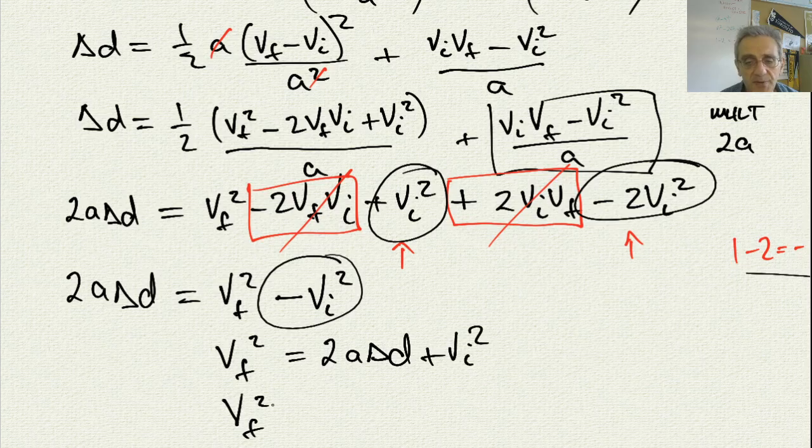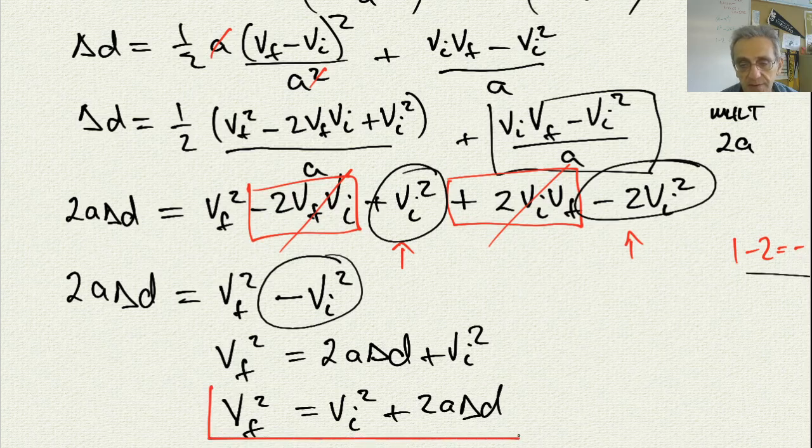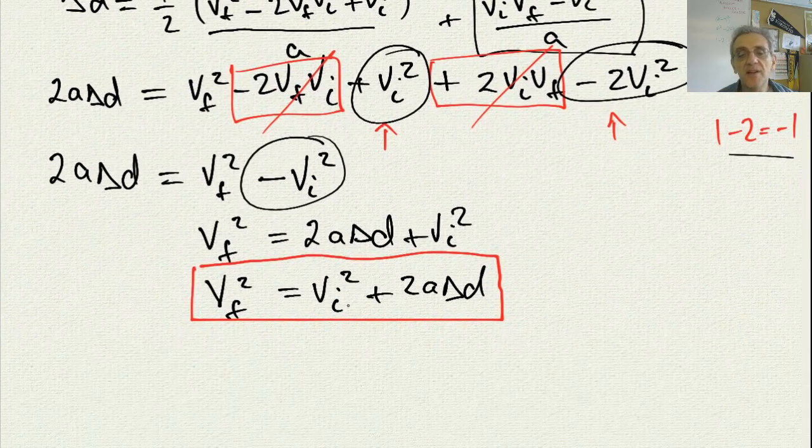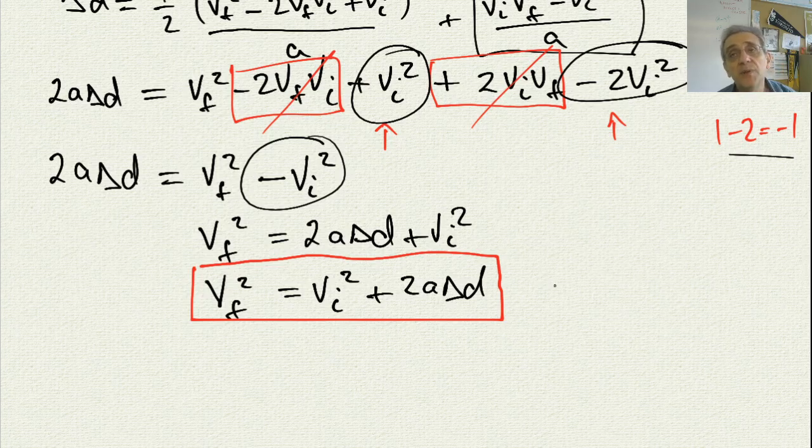Another way of writing this, which is probably my preferred way of writing this, is like this, which is exactly the same, because addition is commutative. It doesn't matter which order you add things. And so here is my last kinematics equation, v-final squared equals v-initial squared plus 2a delta d. Notice that there is no time variable in this equation.